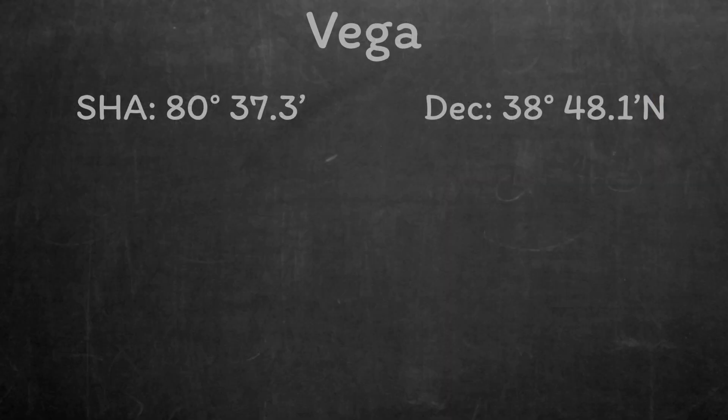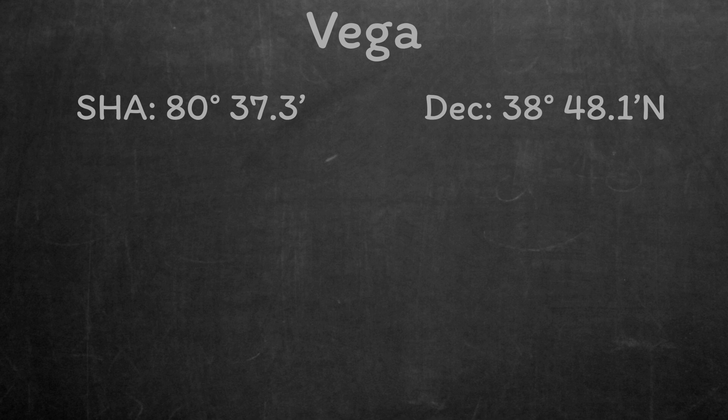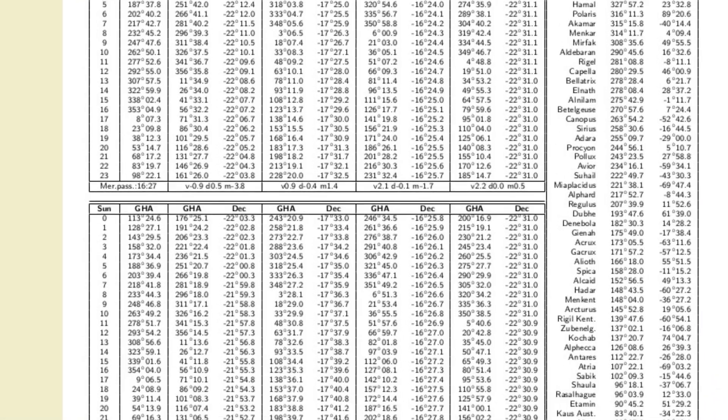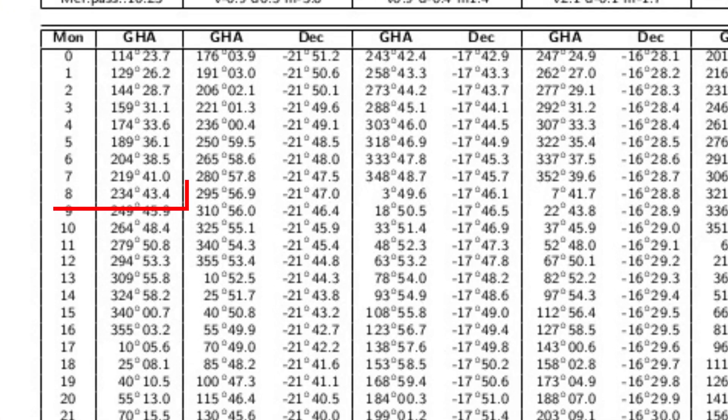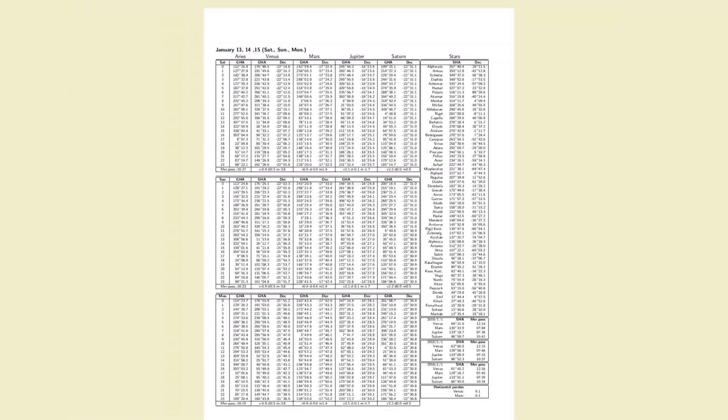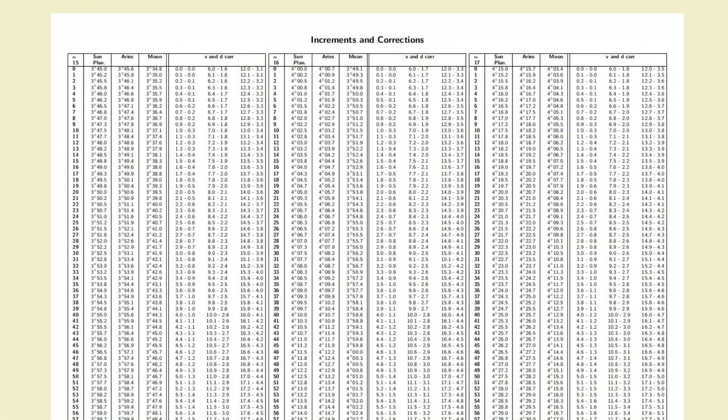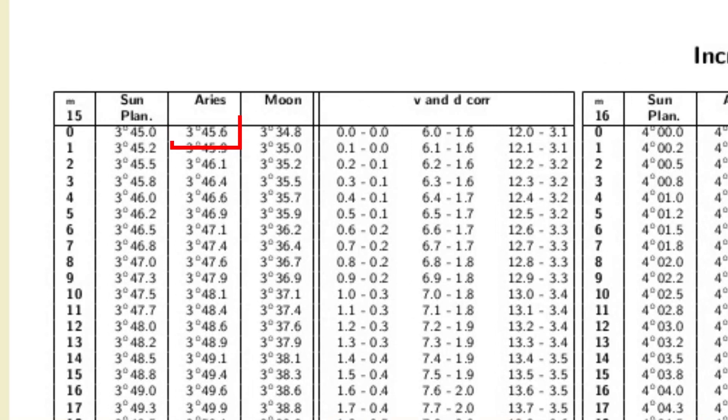To turn that into a local hour angle, we're going to need the data for Aries as well. So, at 8 o'clock, Greenwich hour angle of Aries is 234 degrees, 43.4 minutes. Then we can turn to the increments and corrections pages, and we'll find the increment for 15 minutes, 0 seconds. We get that as 3 degrees, 45.6 minutes.